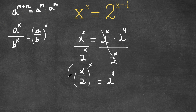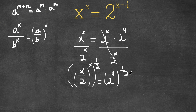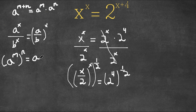Now what I'm going to do is I'm going to take the power of 1 half on both sides. If we have a to the power of m to the power of n, this is also equal to a to the power of m times n. So 2 to the power of 4 to the power of 1 half — what's 4 times 1 half? 2. So this would be 2 to the power of 2.